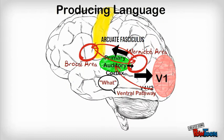For producing language, information is sent from Broca's area to the primary motor cortex that is responsible for moving the mouth to speak or moving the hand to write.